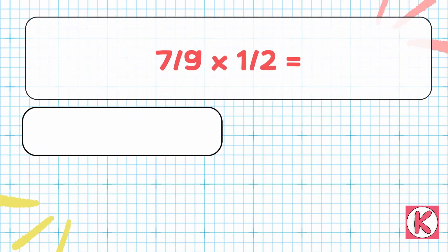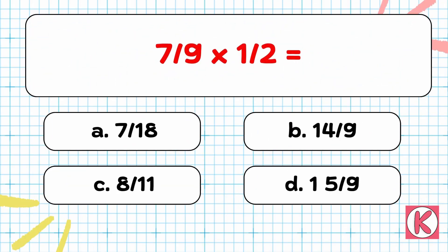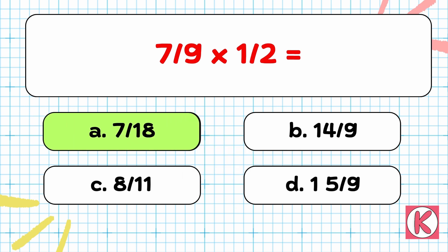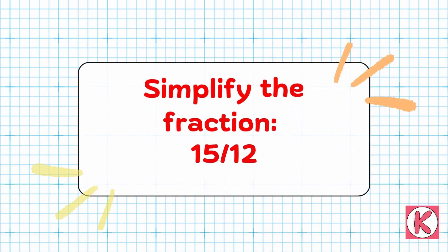Next question. 7 by 9 multiply 1 by 2 equals... Correct answer: Option A — 7 by 18.